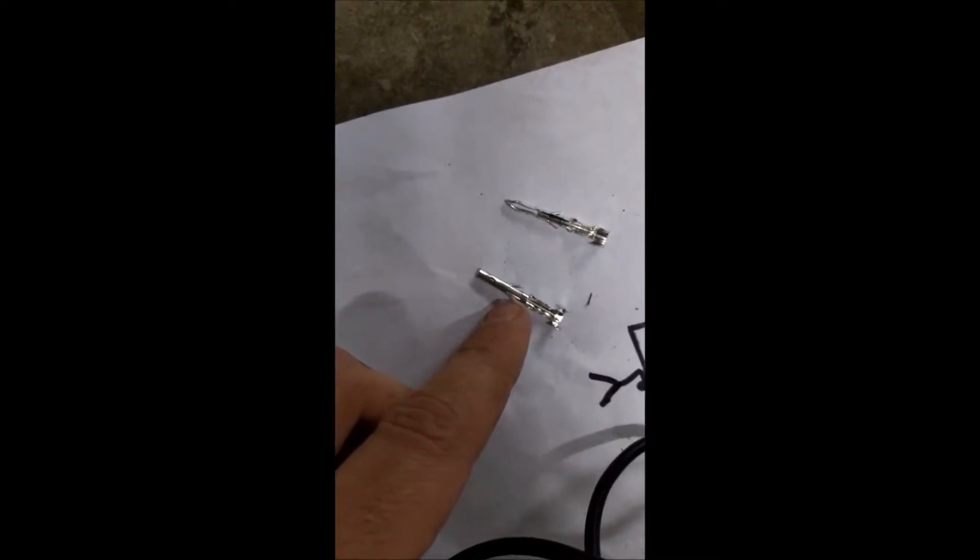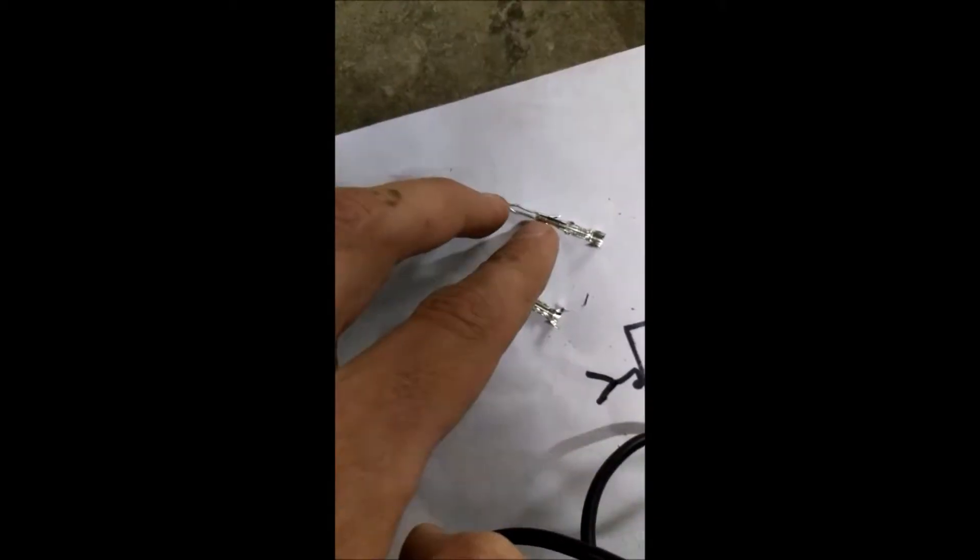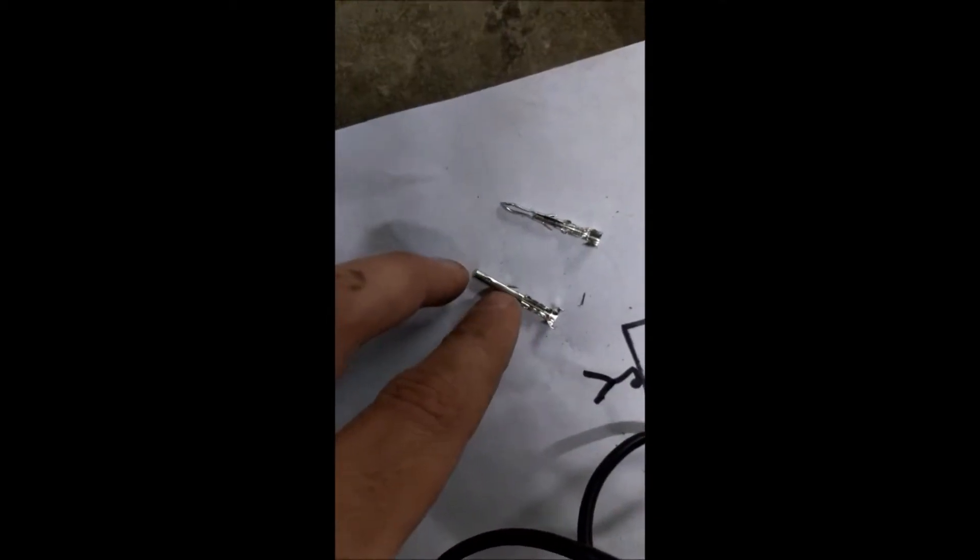Do not crimp these little fish hooks—that's actually what locks them into the weather pack connector. This part right here will come into the female end about that deep.